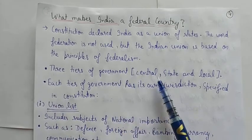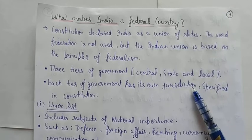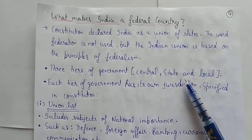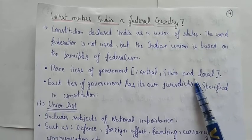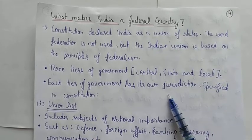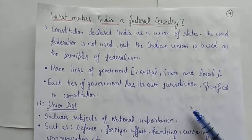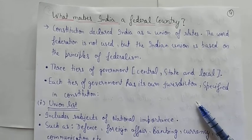Is solution mein three tiers of government banaye gaye: Central, State, aur Local. 1991 ke aas-paas Panchayati Raj bhi aaya — uske baare mein aage discuss karenge. In teeno levels ko alag-alag powers distribute kar di gayi. Each tier of government has its own jurisdiction specified in the Constitution.